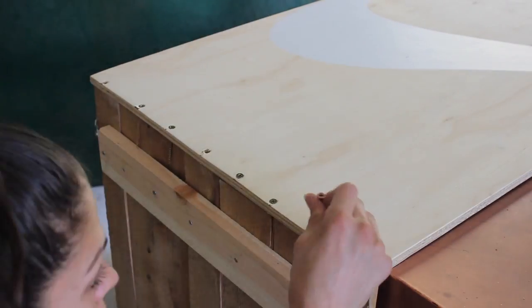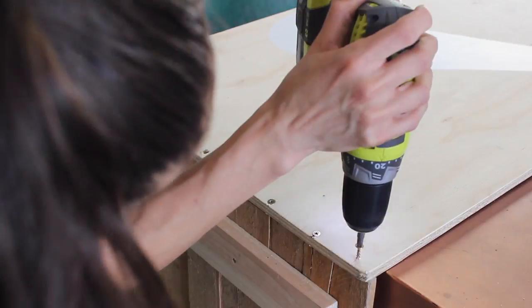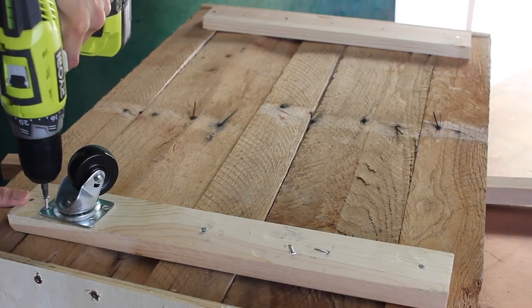Once you're done screwing that side in, you're just going to flip it around and repeat the same thing with the other side. Once you're done with that, go ahead and screw a wheel into each corner.